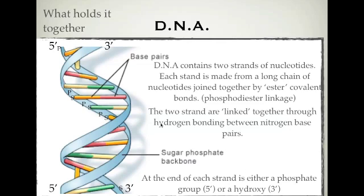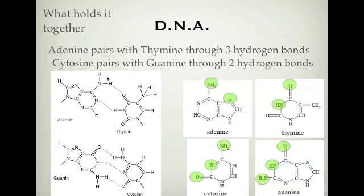Now let's look at the hydrogen bonding. Your nitrogen bases are paired up: every time you have an A, or adenine, you'll have a thymine. Every time you have a guanine, the opposite strand will have a cytosine. Adenine and thymine link together through two hydrogen bonds, and they form at these two specific positions. That's what holds the adenine and thymine together. In your data booklet, these are the two areas which form hydrogen bonds with each other.